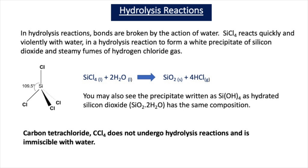You may also see the precipitate written as Si(OH)4 — hydrated silicon dioxide SiO2·2H2O — as this has exactly the same composition as silicon hydroxide.